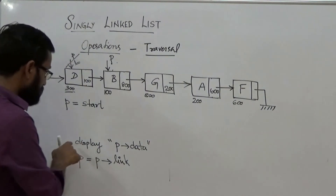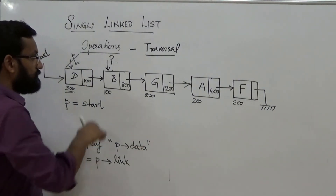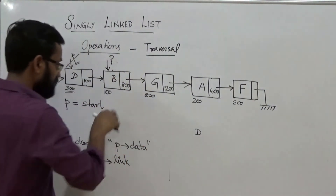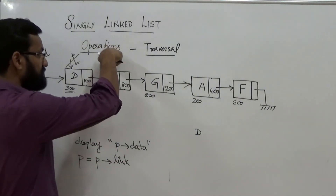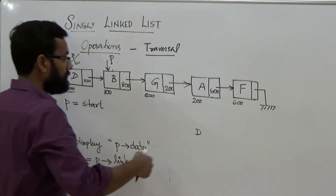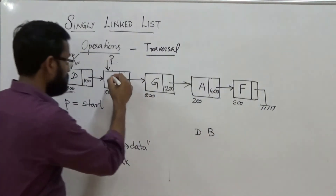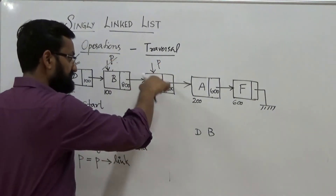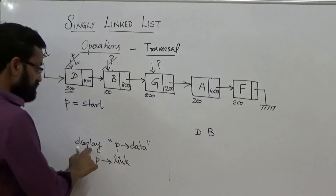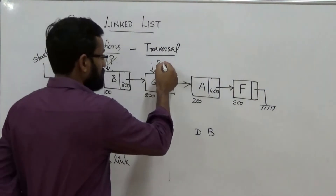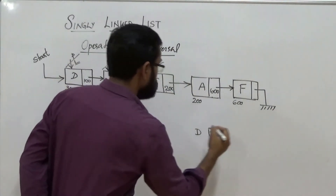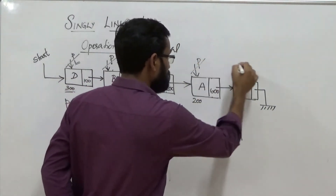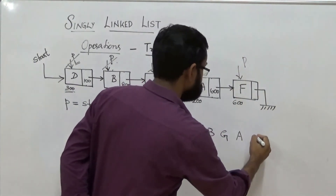You then repeat the same operations: display P.data, then shift the pointer with P = P.link. The first execution displays D. After shifting P to the successor, you display the next value. Continuing this process, you display G, then shift again, display A, shift again, and display F, visiting each node in sequence.